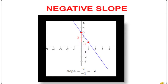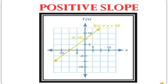Here is a picture of a positive slope and here is a picture of a negative slope. Do you notice the difference between positive and negative slope? The difference is: positive slope is going up and negative slope is going down.